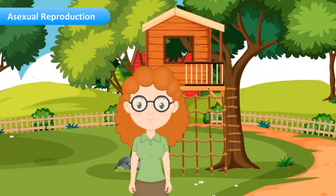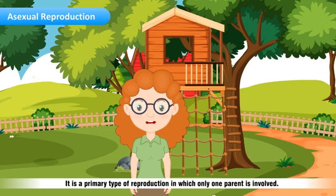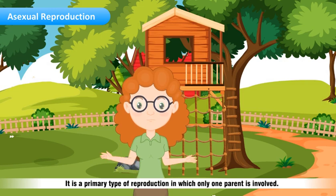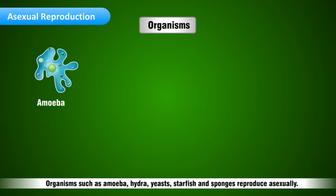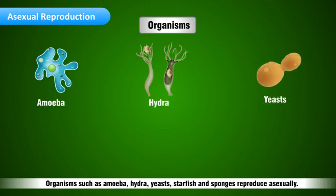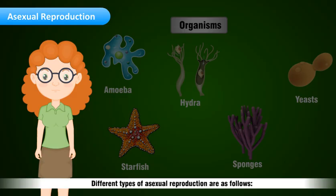Asexual reproduction is a primary type of reproduction in which only one parent is involved. Organisms such as amoeba, hydra, yeasts, starfish, and sponges reproduce asexually.